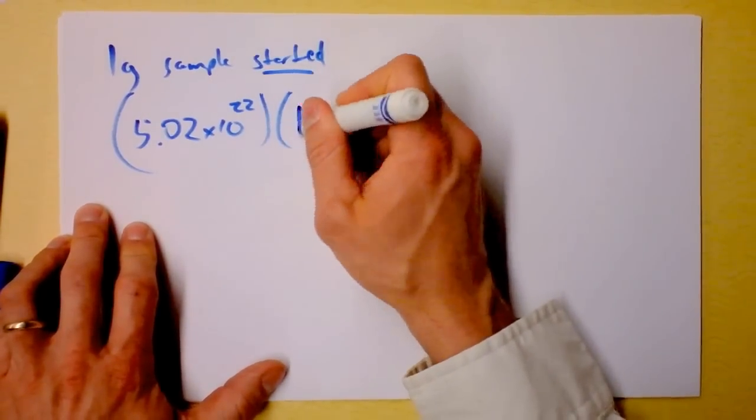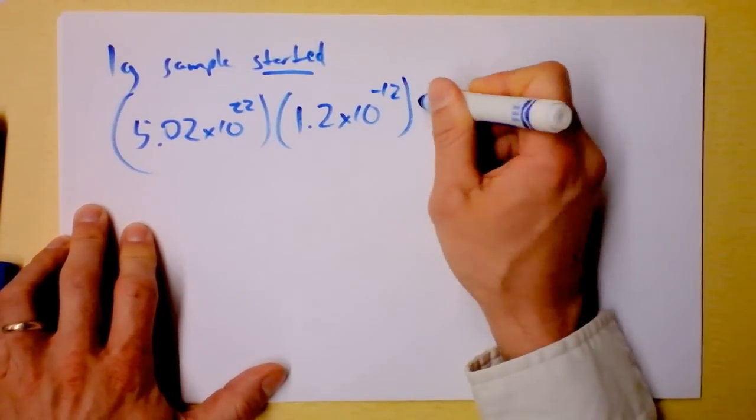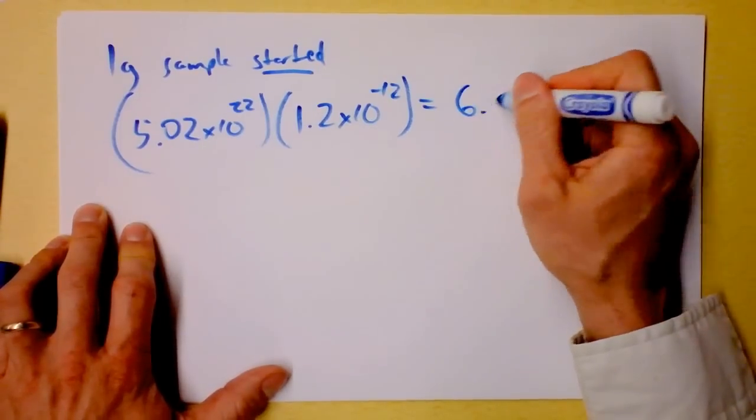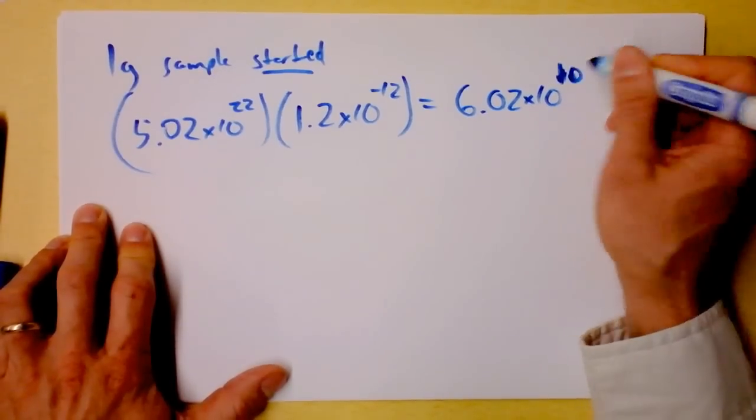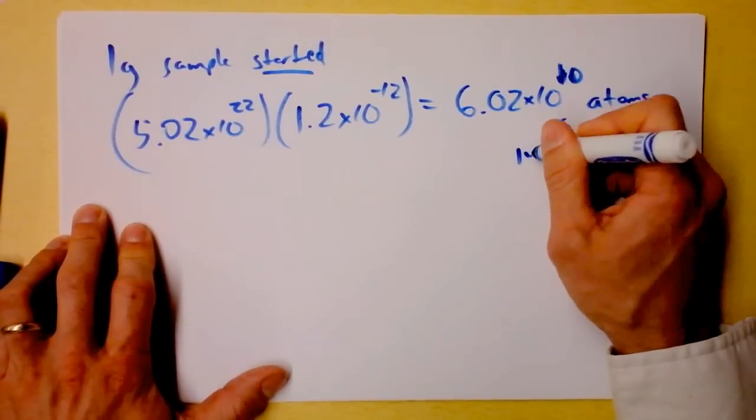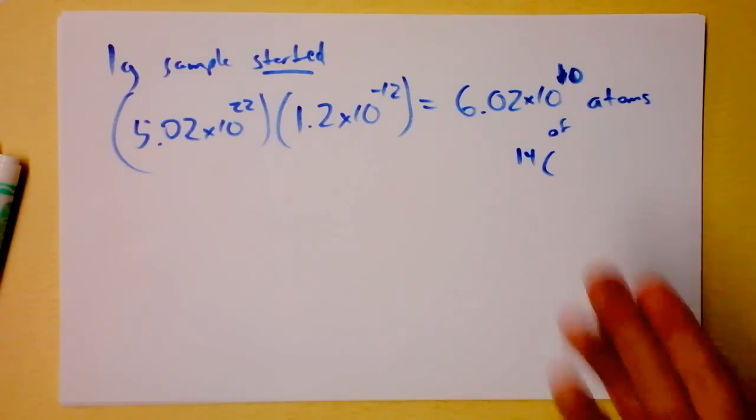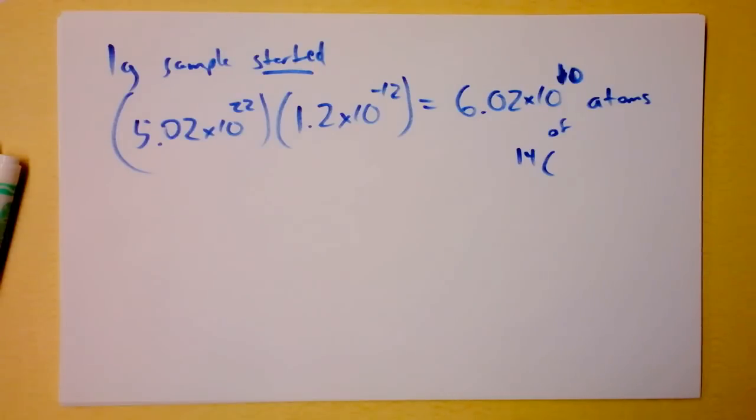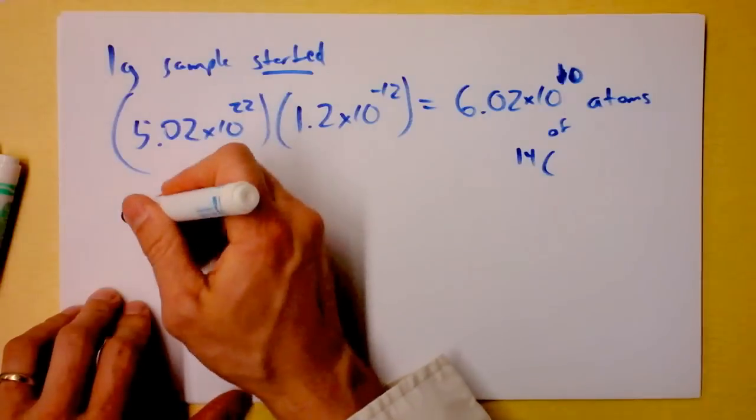Let's see. I'm going to take 5.02 times 10 to the 22nd atoms and multiply by the fraction of the atoms that are actually carbon-14, right? That's a small number. Where is that small number? I don't know. I've written down somewhere. 1.2 times 10 to the negative 12th. And that gives me 6.02 times 10 to the 10th atoms, 10 to the 10th atoms of carbon-14. That's what we're starting with, and it's a pretty big number. What's that, 60 billion? Yeah, we're still cool.